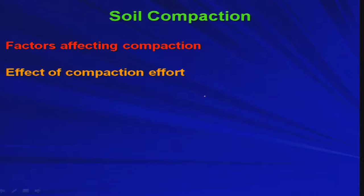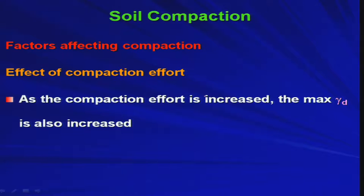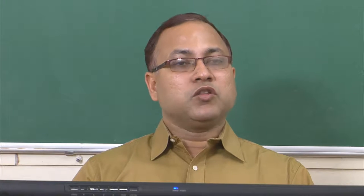Coming to the effect of compaction effort: in the standard Proctor test we give 25 blows on each layer to compact it. If you increase the number of blows — meaning you give more energy to the matrix — you are providing more compaction effort. As the compaction effort is increased, the maximum gamma D is also increased; your maximum gamma D will continuously increase with increase in compaction effort.